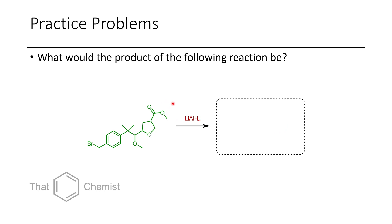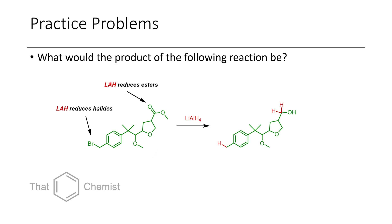In the next problem, I ask what the proposed product of the following reaction would be. There are a number of functional groups, and even though we were mainly talking about the reduction of carbonyls in the last episode, it's important to know that LAH reduces all carbonyl compounds, including esters, as well as halides. So in this case, the benzyl bromide would be reduced to a benzyl hydrogen — this becomes a toluene instead of a benzyl halide — and then the ester group gets reduced to an alcohol. The methyl ether and the tetrahydrofuran ring would both be well tolerated.